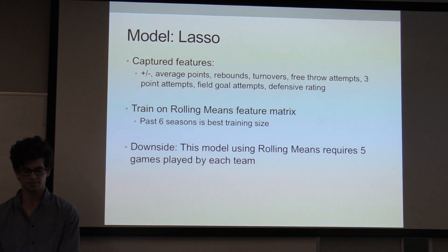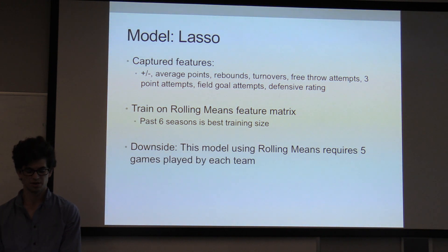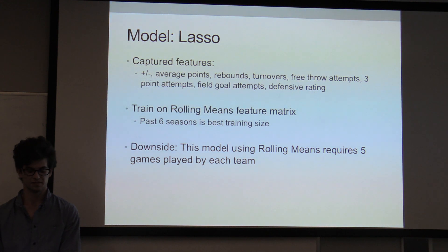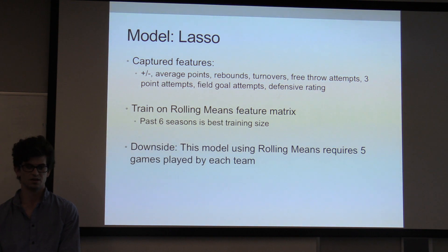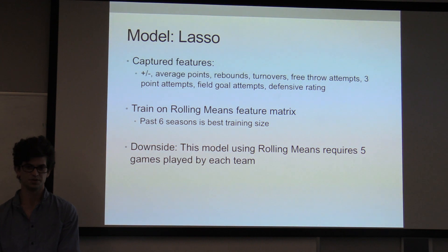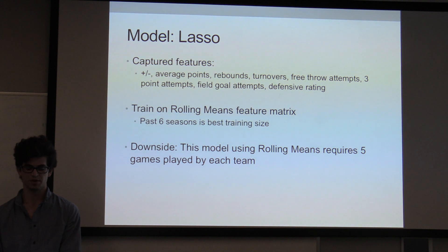My model was the Lasso model, and it captured pretty obvious statistics that you would think it would, like the average points. But it also captured things like the defensive rating that I added in using feature engineering. Because of the divergence toward a higher scoring league, I decided to use only the past six seasons, instead of all of the data I have, to train my model.